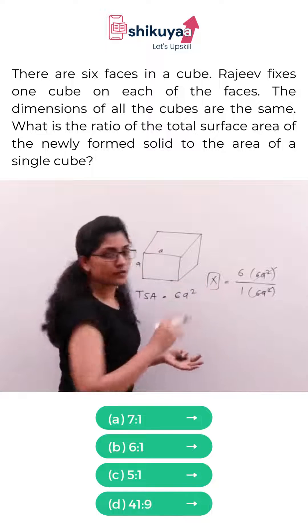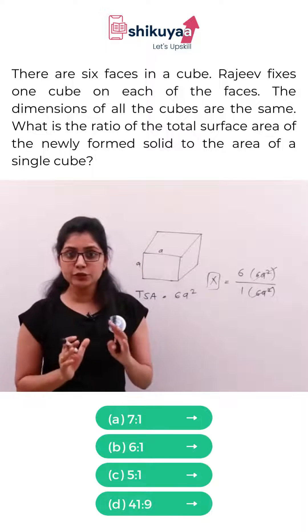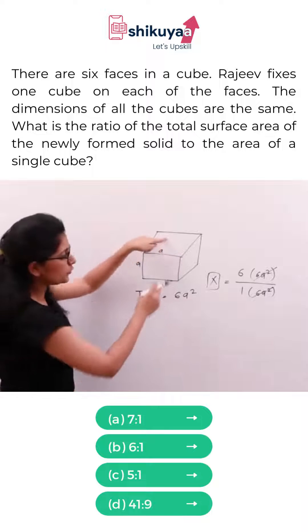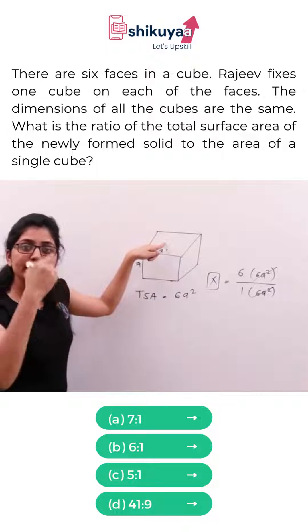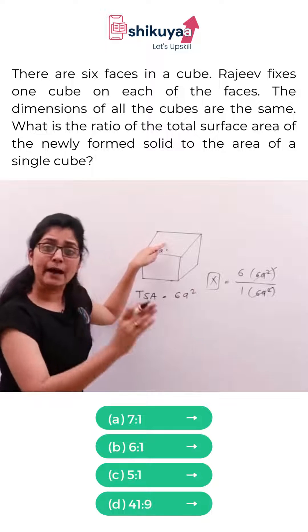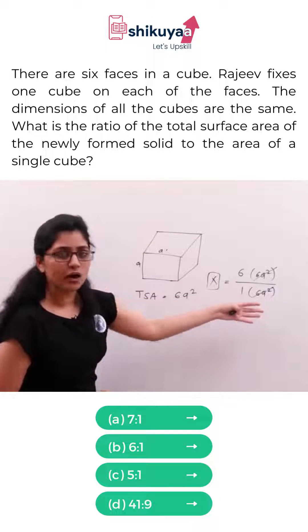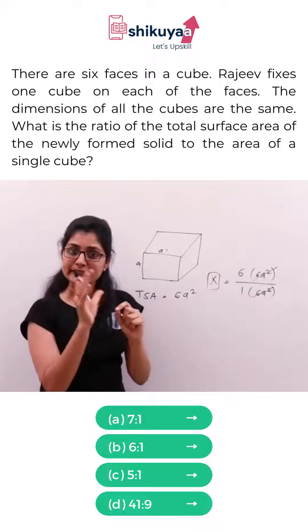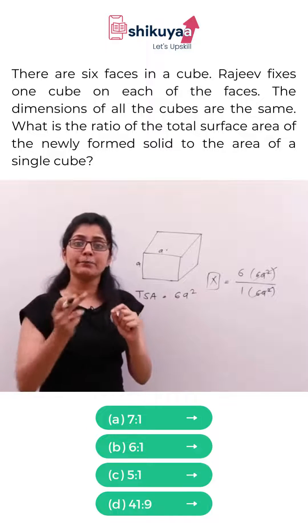Because if you can observe, whenever you are trying to fix one extra cube over this surface, this surface is getting counted double. And this happens for every face. As you can observe here in our animation, one surface from the inner cube gets counted double every time.